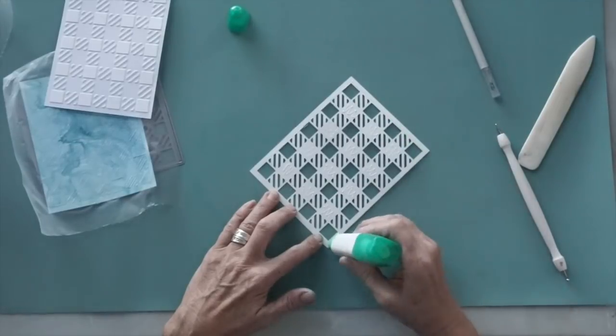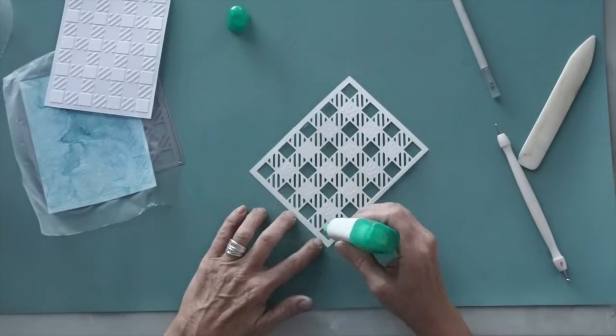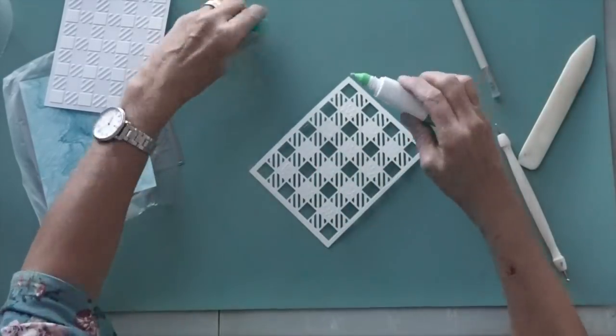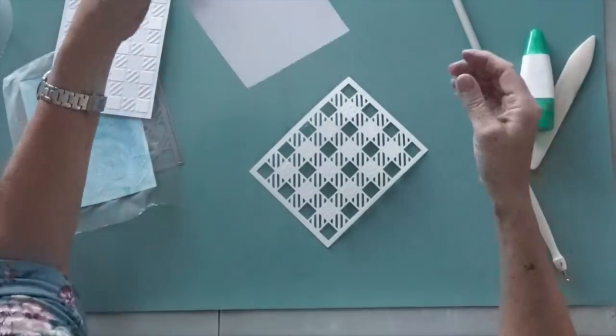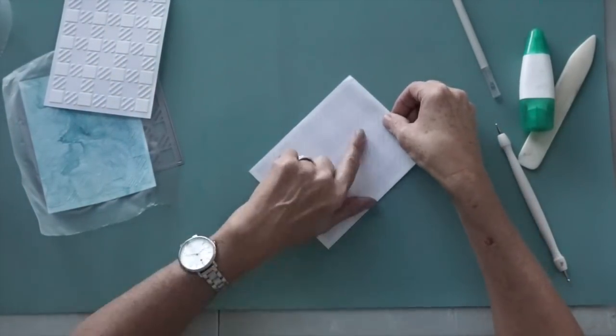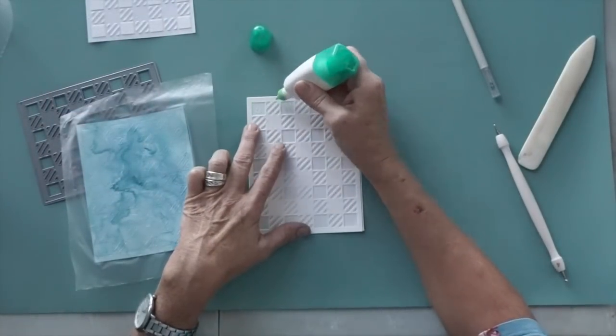So once again what I'm doing here is just running a really fine bead of Tombow mono multi adhesive onto the background so that I can adhere this to a thin sheet of typing paper. I like to use that because it's really lightweight and it saves my card from getting too bulky.